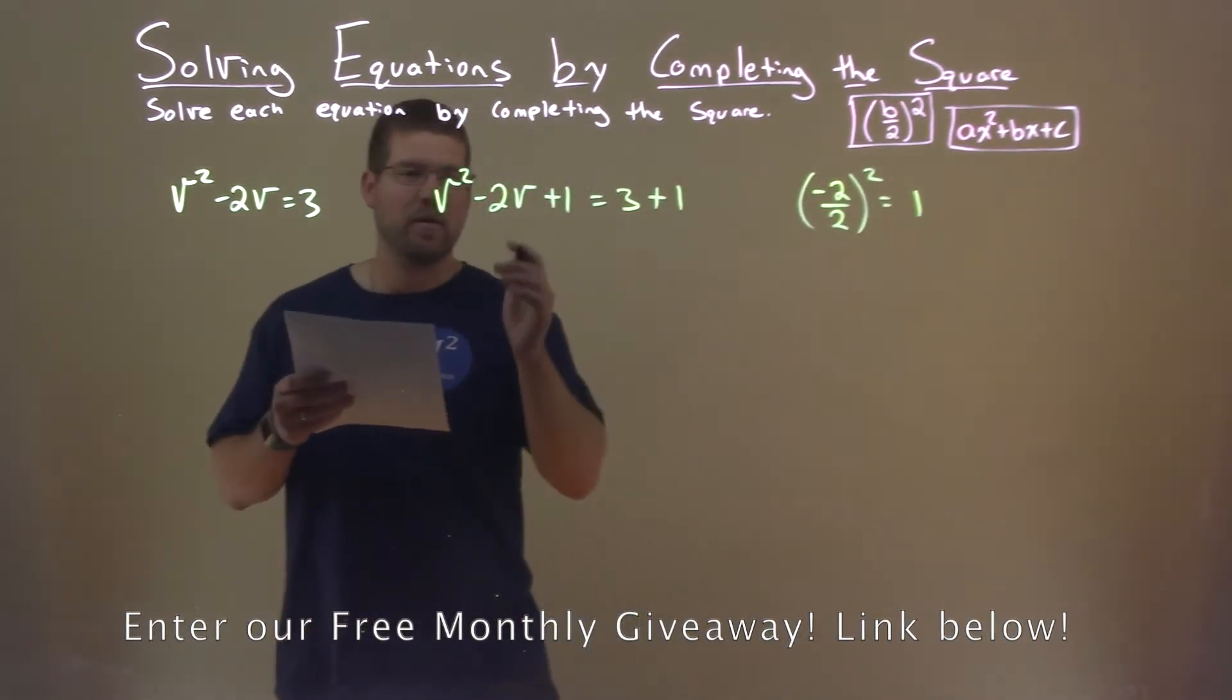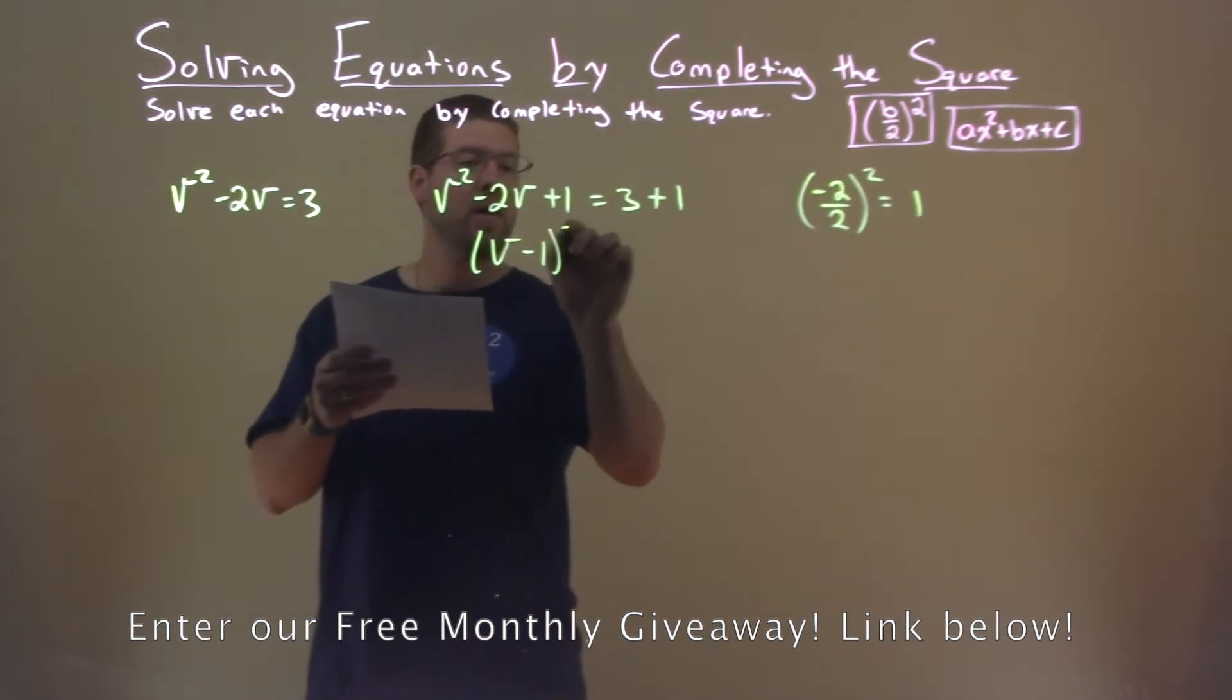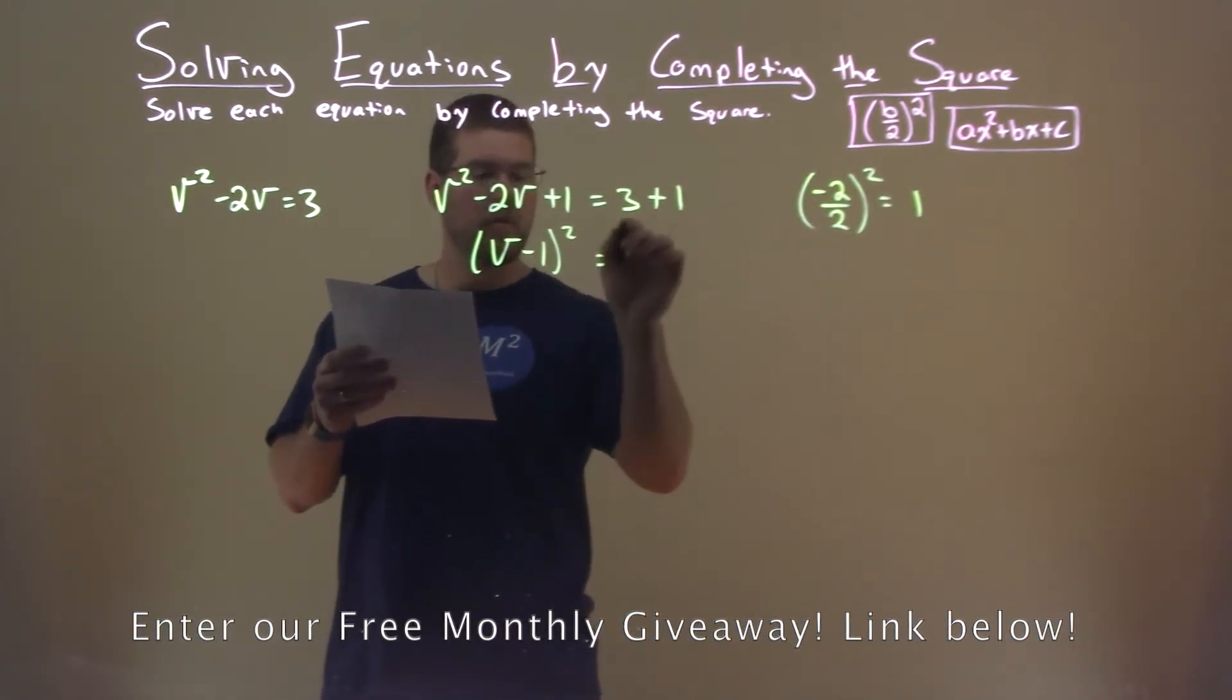The left-hand side now is a perfect square, v minus 1, all squared. 3 plus 1 is 4.